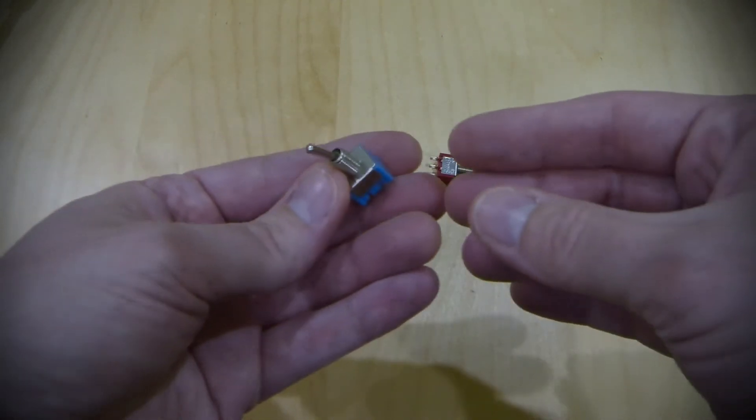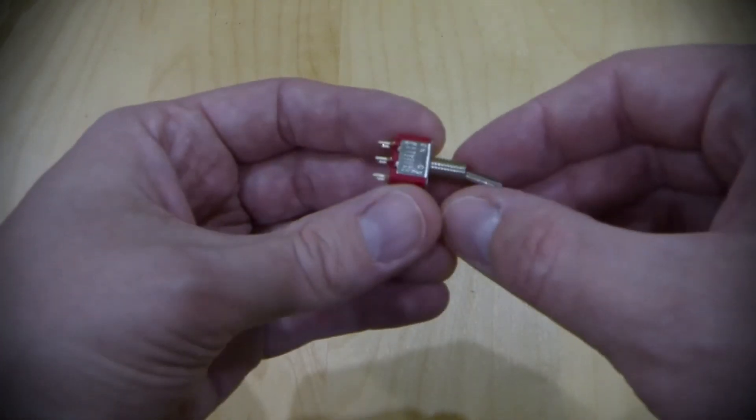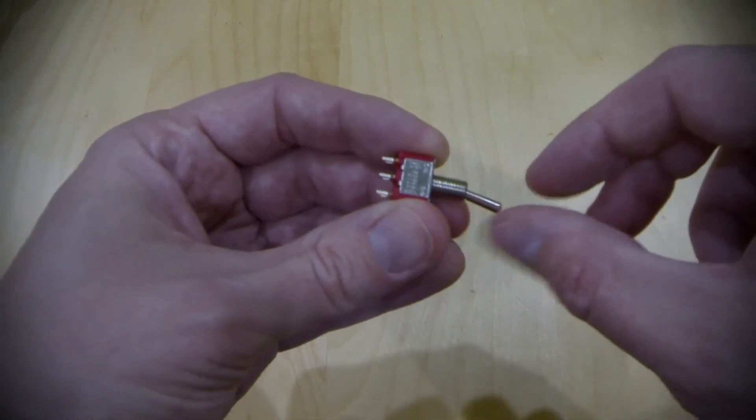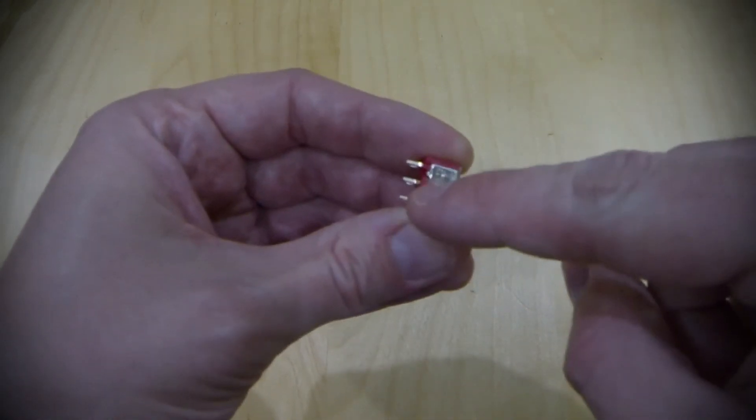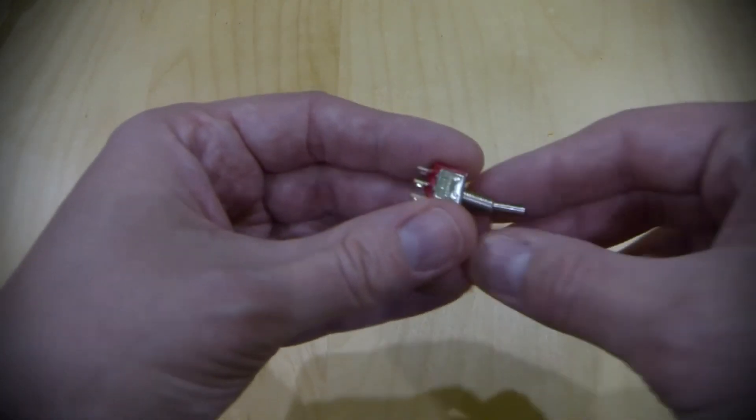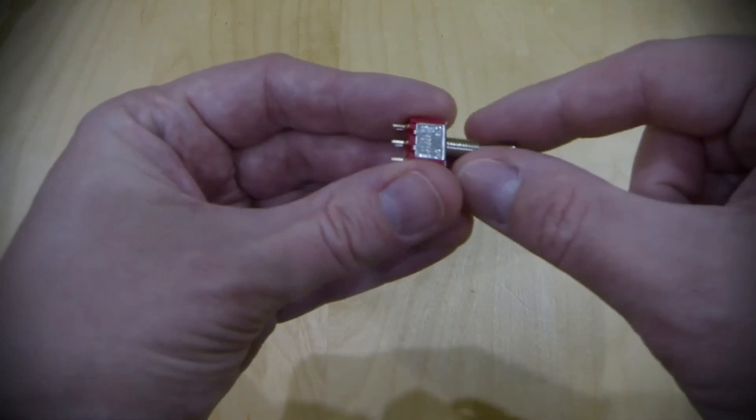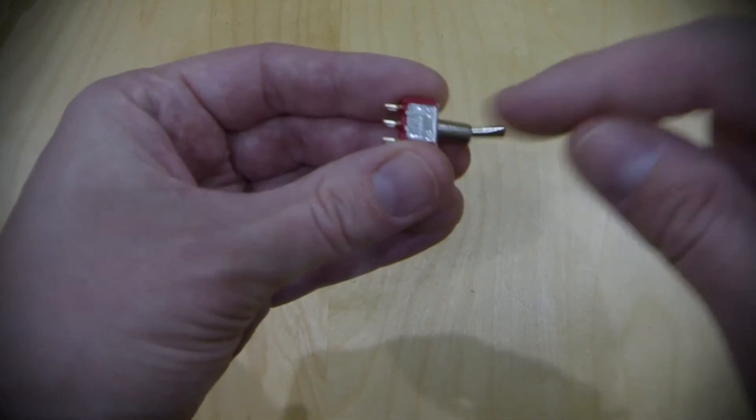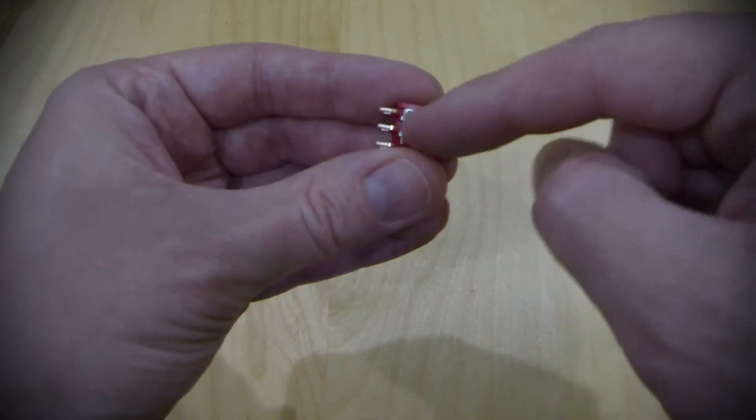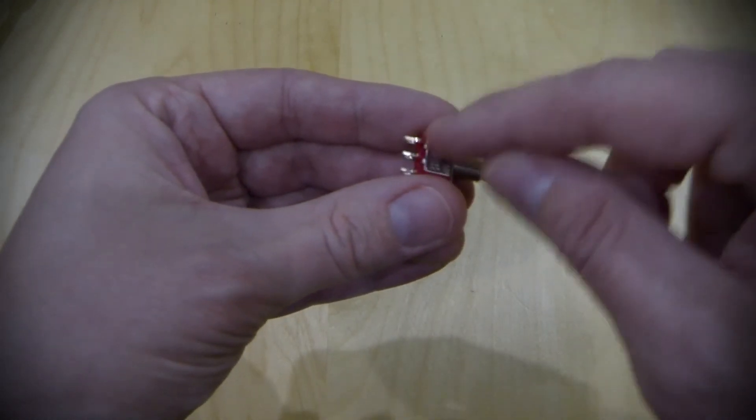Now there are also multiple ways that these switches come. So this switch is a single pole double throw again, but it's an on-on switch, meaning that there are only two positions on the switch. These two pins connected or these two pins connected. You can also get these switches in an on-off-on configuration, meaning that you have one position with these two, a center position with neither connected, only the center. It's sort of floating, it's not connected to anything, and then a third position with the other pole connected.